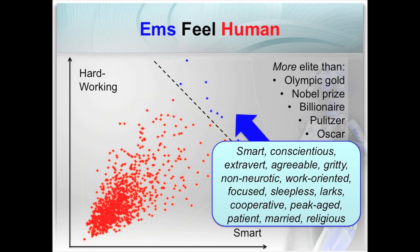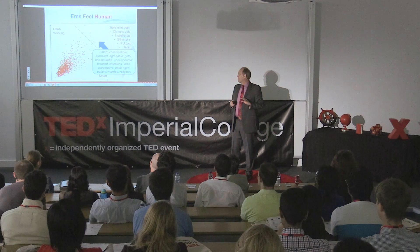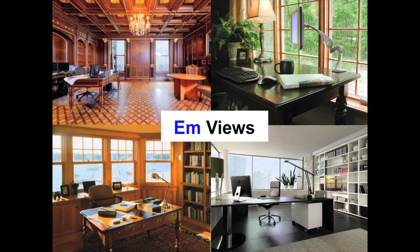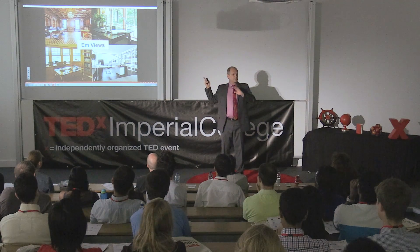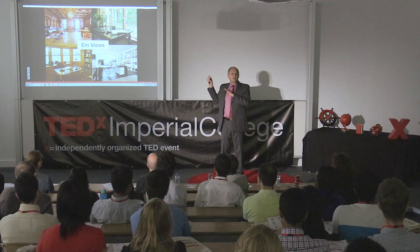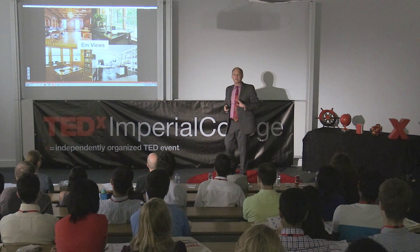We can predict many things about this sort of people because we know what correlates with productivity in our world. They tend to be hardworking and smart, tend to be married and religious, tend to be at a peak age near 40 or 50 — the peak productivity age for us. Most jobs in an advanced economy are desk jobs, so that'll be true for emulations as well. As long as they're at a desk job, it might as well be a virtual reality desk — ridiculously luxurious, beautiful, comfortable. Emulations in virtual reality never need to feel hunger, pain, disease, or grime. They are working most of the time — workaholics, but very good at their jobs.